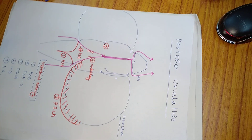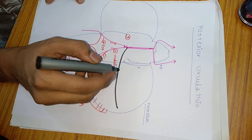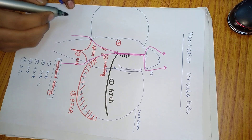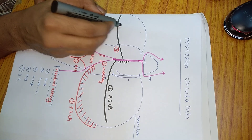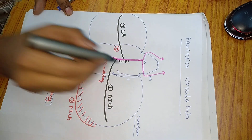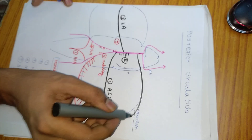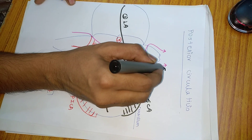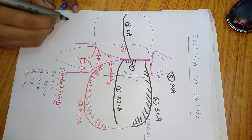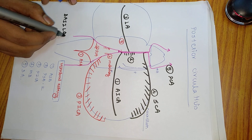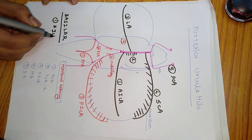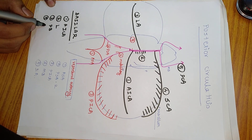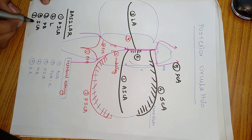Now coming to the second important artery, which is the basilar artery. The first branch is AICA — anterior inferior cerebellar artery. The second will be small pontine branches. The third one is the labyrinthine artery. The fourth one is the superior cerebellar artery, which supplies the superior part of the cerebellum. The fifth one is the posterior cerebral artery. So the five branches of the basilar artery are: AICA, labyrinthine, pontine branches, superior cerebellar, and posterior cerebral artery.